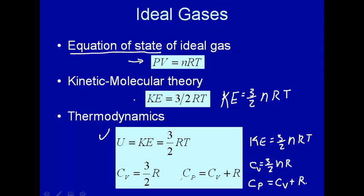Now let's look at the relationship between heat capacity at constant pressure and heat capacity at constant volume. What we're going to show is that they're related just by a factor of nR. To show that, let's start with the definition of enthalpy.